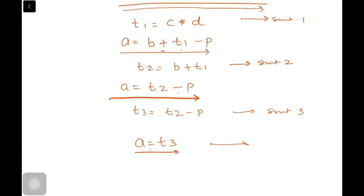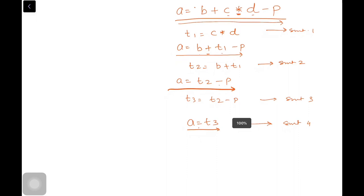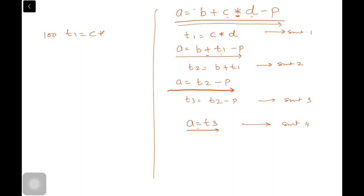If I have to write a three address code format for this, I will start with the starting address 100. It will be t1 is equal to c into d. 101: t2 is equal to b plus t1. 102: t3 is equal to t2 minus p. 103: a is equal to t3. That's the conversion, three address code format.